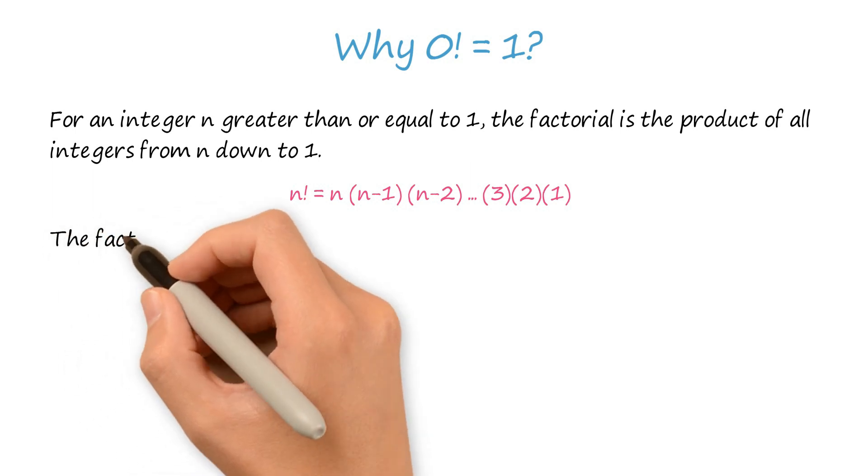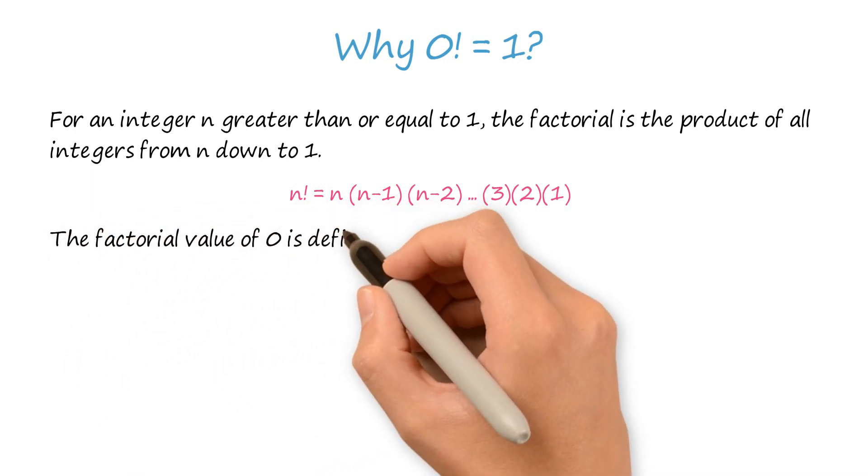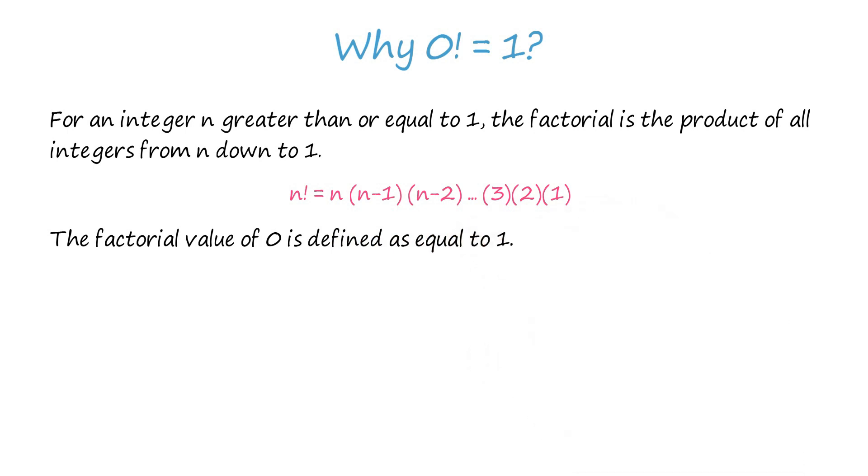The factorial value of 0 is defined as equal to 1. There is reason for this definition, it is not arbitrary.